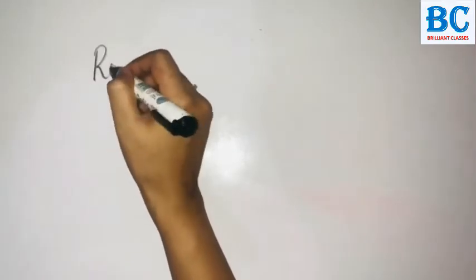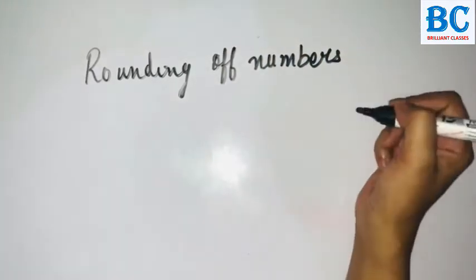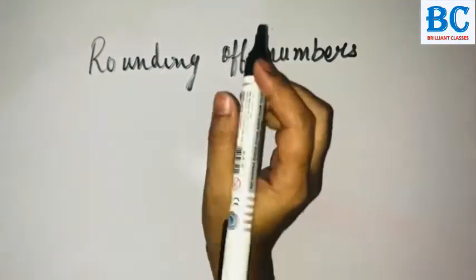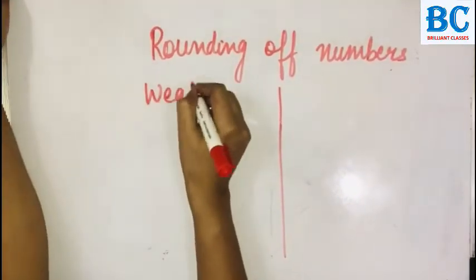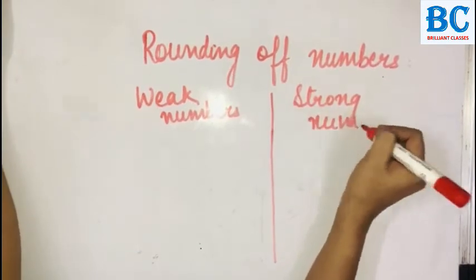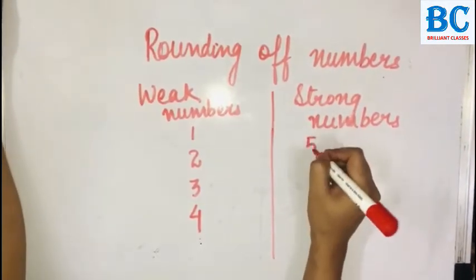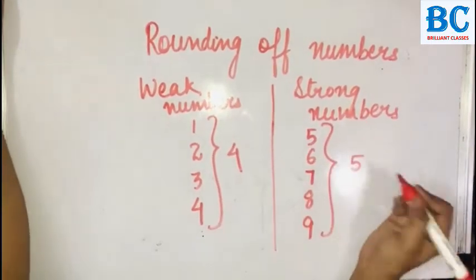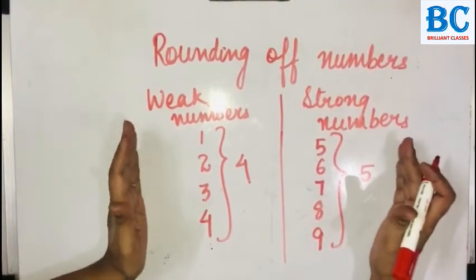Today we will begin with the chapter rounding off numbers. Rounding off numbers is a chapter which is very fun to learn, and there are some basic concepts that if you learn them, it will be very easy. The first thing to remember in this topic is that there are two sets of numbers: weak numbers and strong numbers. Weak numbers include one, two, three, and four, whereas strong numbers include five, six, seven, eight, and nine.